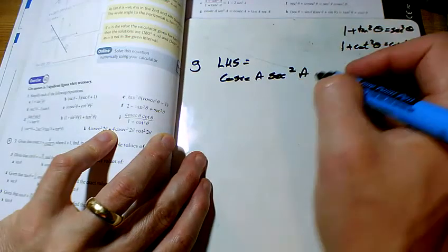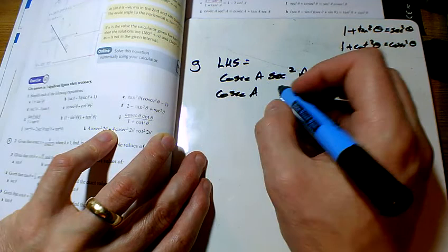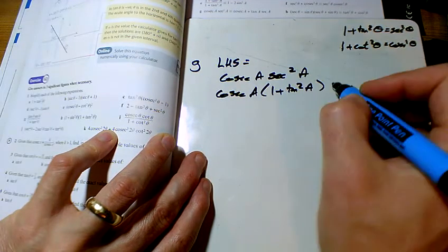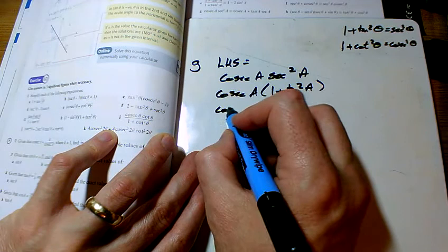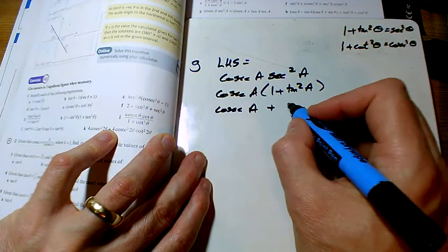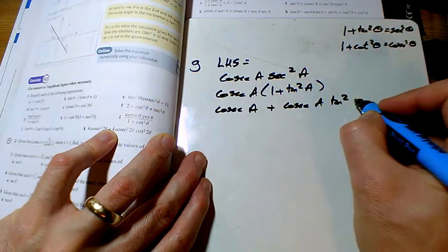For G, starting with the left-hand side, I've got a sec squared, so let's make that a 1 plus tan squared, and then we can multiply that out. So if we multiply that out, I've got a cosec a, I wanted that, and then I've got a cosec a tan squared a.